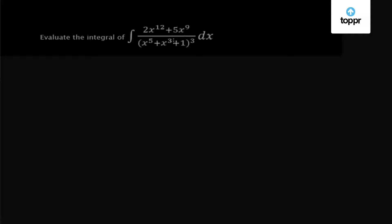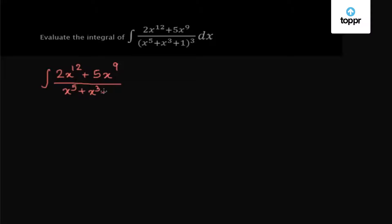This integral might seem a bit complex at first, but don't lose heart. Try to simplify it. We write down the integral as 2x to the power 12 plus 5x to the power 9 upon x to the power 5 plus x cube plus 1, whole cube, into dx.